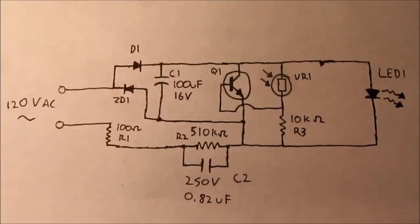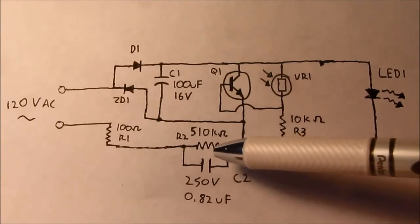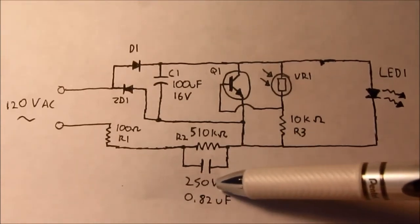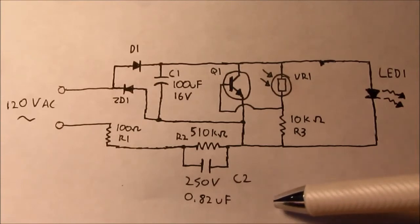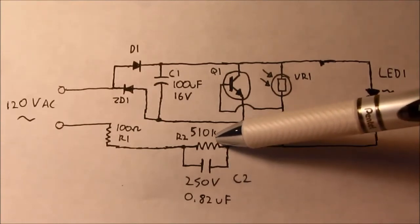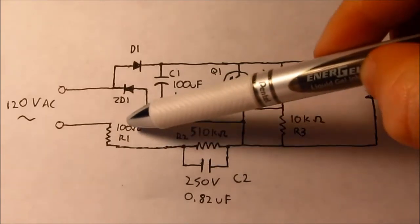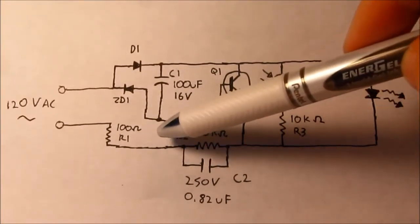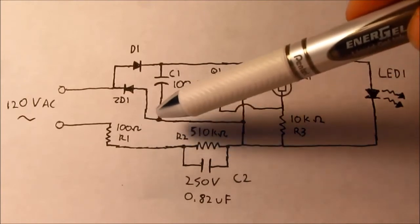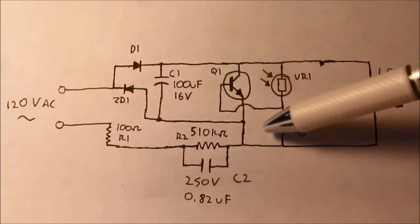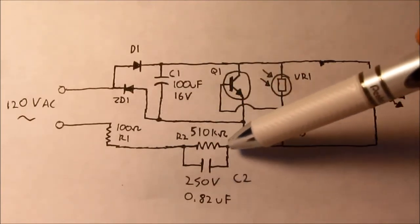Current limiting and voltage regulation is provided by C2, the 250 volt, 0.82 microfarad film cap, R2, the 510 kilo-ohm resistor, and R1, which I believe is just sort of like a fusible resistor that'll burn out if there's a major fault. Those keep the current in check.